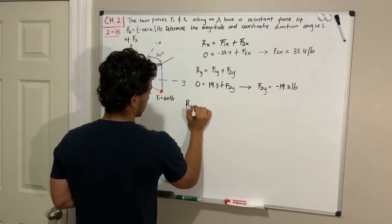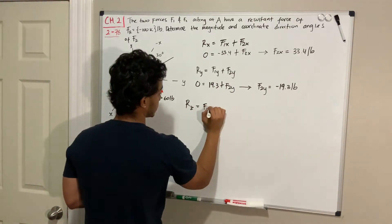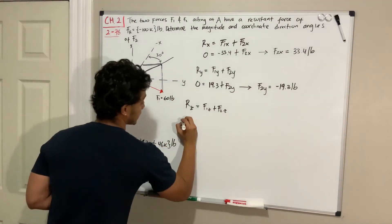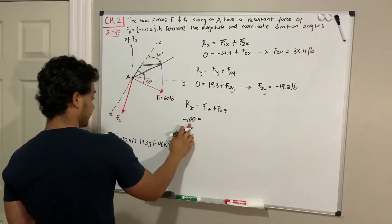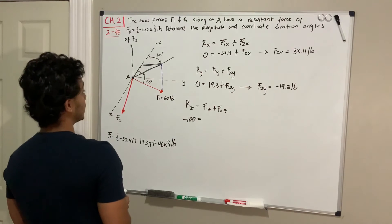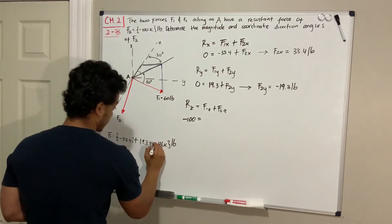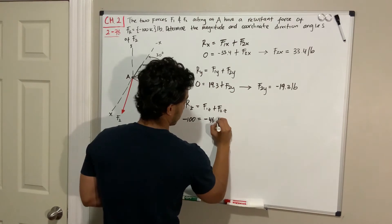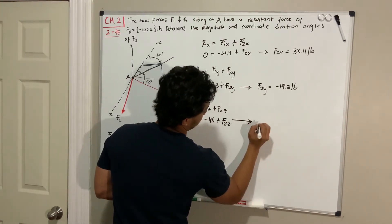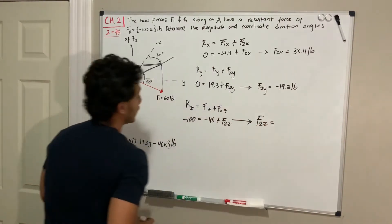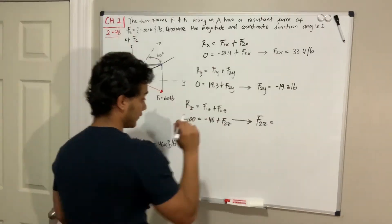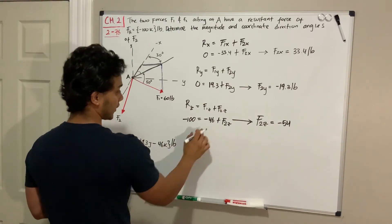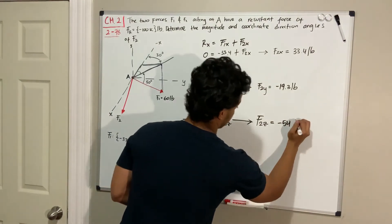For the z direction, the resultant is negative 100, equal to F1_z plus F2_z. Wait — I wrote F1_z as positive 46, but it's actually negative 46 because it's going down. So: negative 100 equals negative 46 plus F2_z. Solving: F2_z equals negative 100 plus 46, which gives negative 54 pounds.